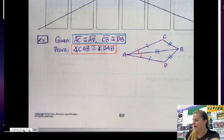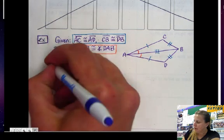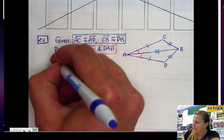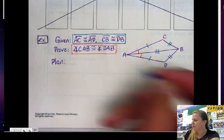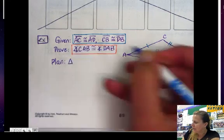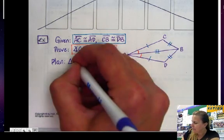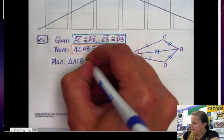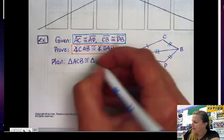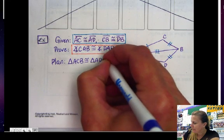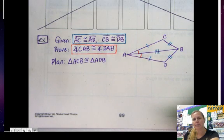So now let's talk about our plan. What is our plan going to be? First of all, we need to prove the triangles are congruent. So triangle ACB is congruent to triangle ADB. And how are we going to prove that?